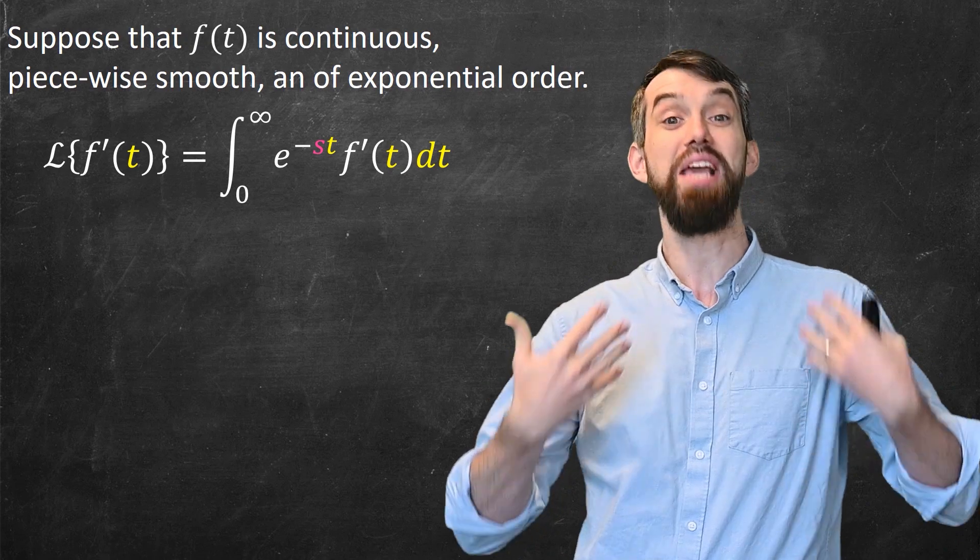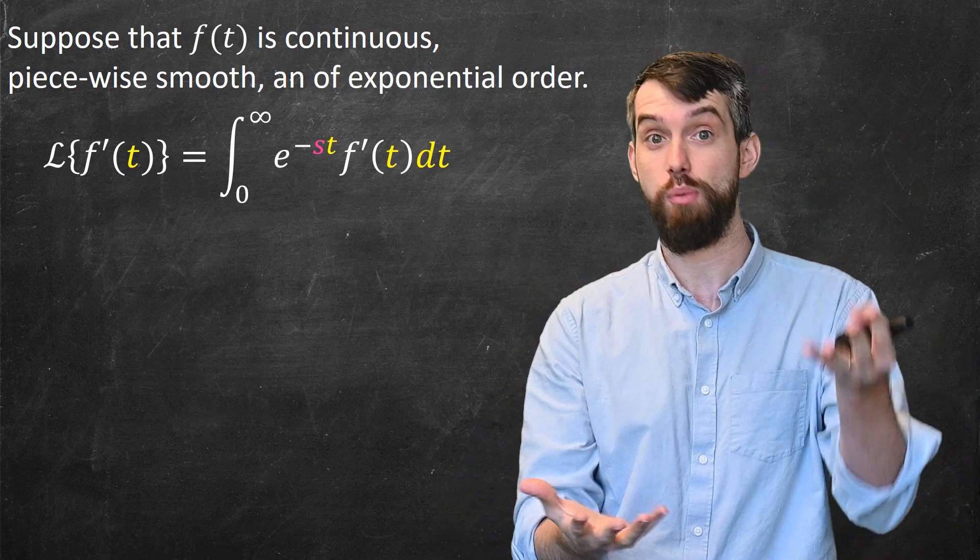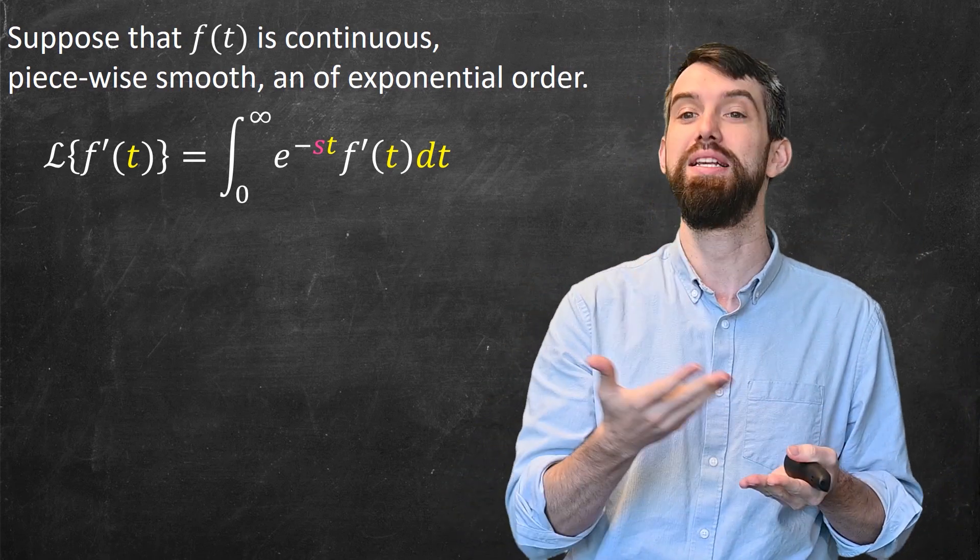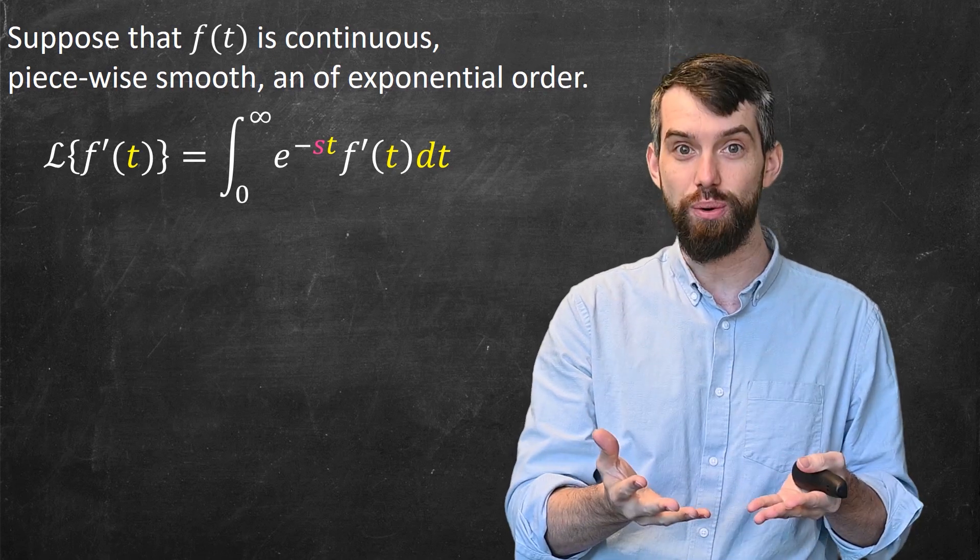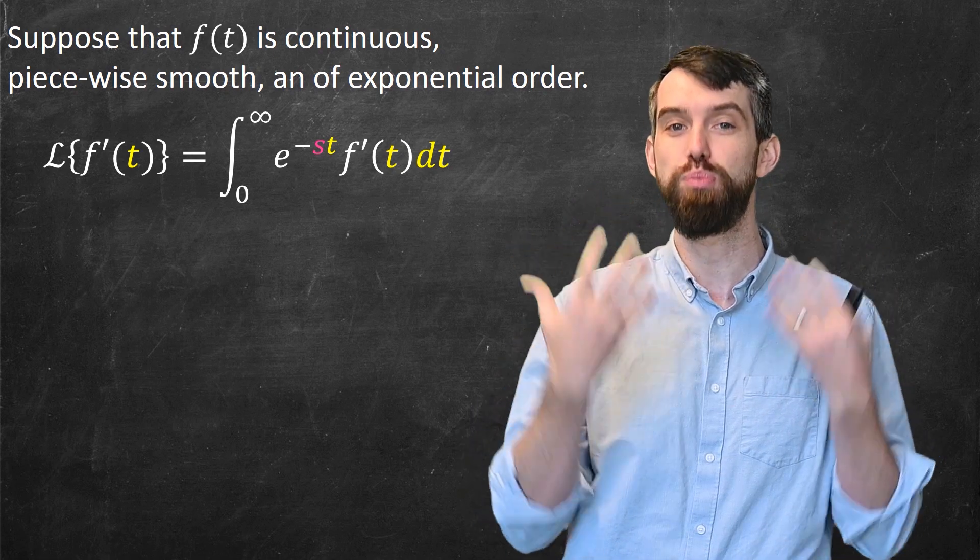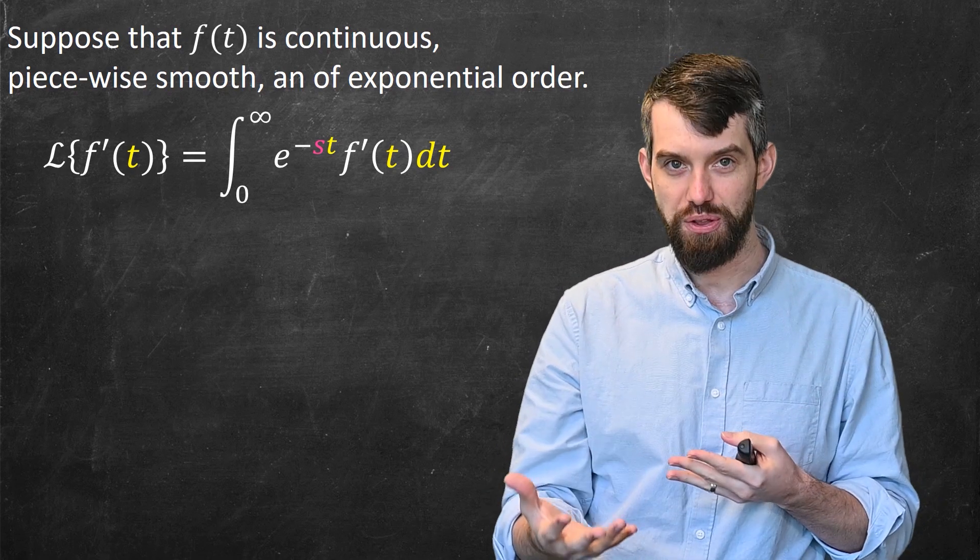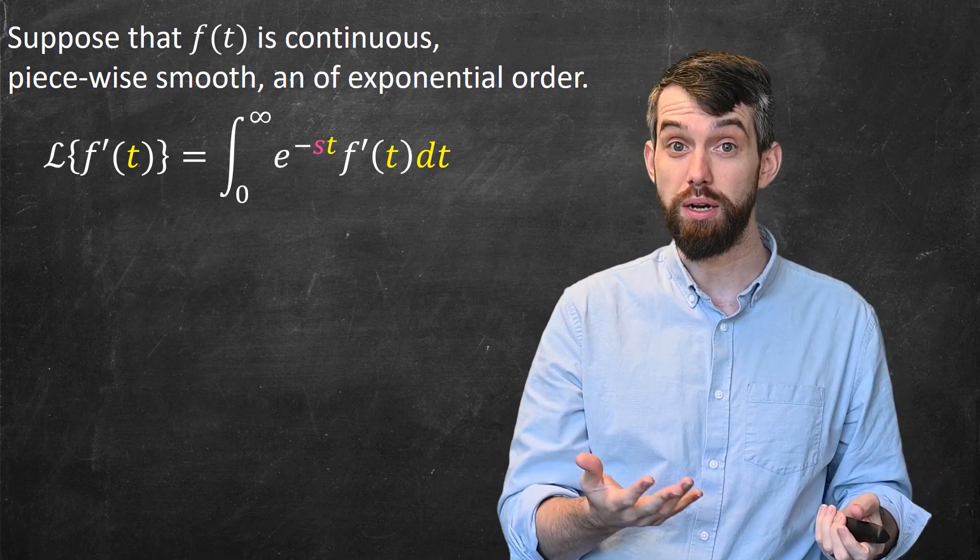If I just naively plug it into the formula, it's the improper integral from 0 to infinity e^(-st) as I always have, but now the integrand gets multiplied by f'(t). To evaluate this integral, I'm going to use integration by parts.